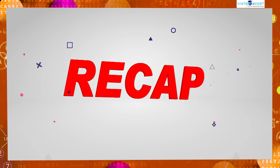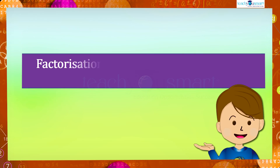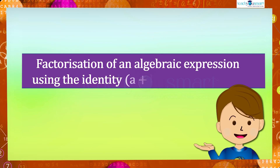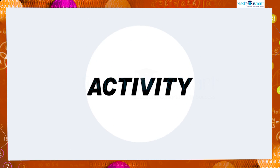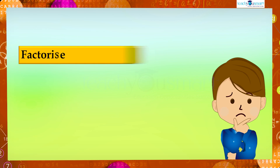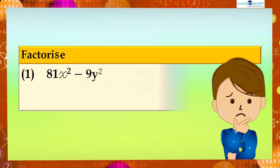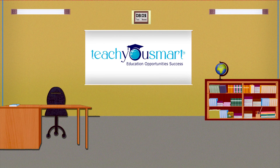Let's check what we discussed today: factorization of an algebraic expression using the identity a plus b multiplied by a minus b equals a square minus b square. Before winding up, let's check how much you understood by doing an activity. Factorize: first, 81x square minus 9y square; second, 4p square minus 16q square. That's all for now, see you all in the next class.